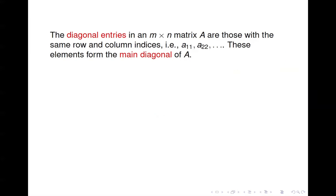The diagonal entries in a matrix A are those where the row and column indices are the same — so like a11, a22, and so forth. These elements we call the main diagonal of A.